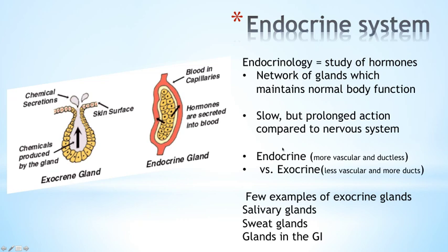What does endocrine really mean? Well, 'endo' means within and 'crin' means secrete. So an endocrine gland will secrete directly into the bloodstream. This is in contrast to an exocrine gland which will secrete into a duct. So endocrine glands are highly vascular and ductless, whereas exocrine glands use ducts and don't need to be as vascular.